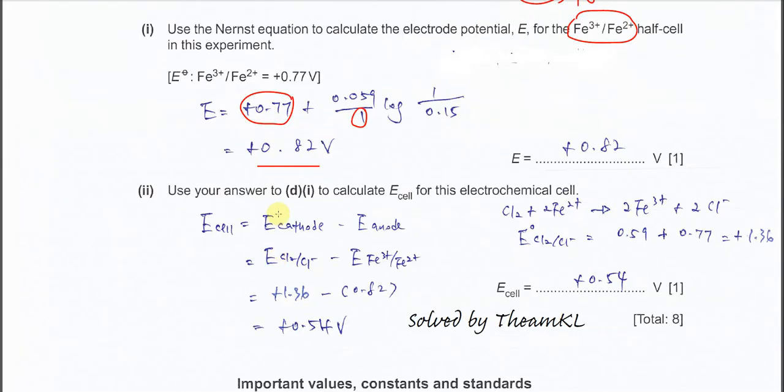Part 2: Use your answer in D1 to calculate the Ecell for this electrochemical cell. Before you get Ecell, you must get the E° half-cell for the chlorine electrode. We know from the equation the chlorine is the cathode because it undergoes reduction. E°cell equals E cathode minus E anode, so to get E cathode, we use E°cell plus E° anode. This is the oxidation half-cell.